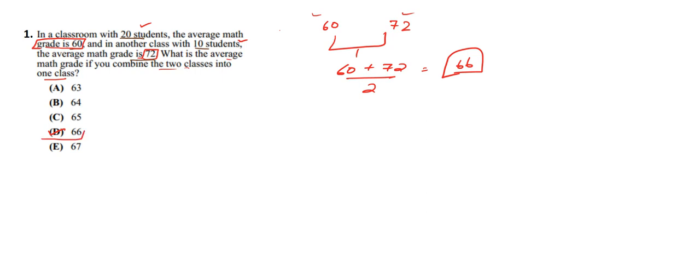But this is a wrong concept. We cannot take the direct average of both because we have different numbers of students in each class — 20 students in one and 10 in the other. If both classes had the same number of students we could take the direct average, but since they differ, we cannot.